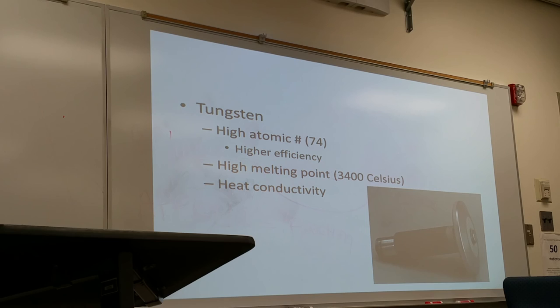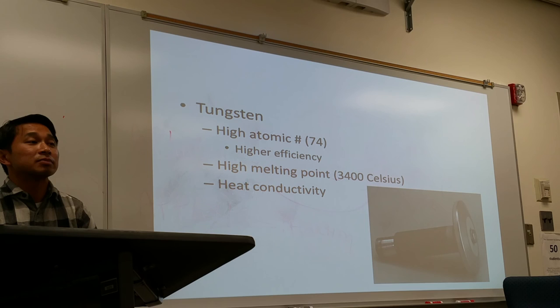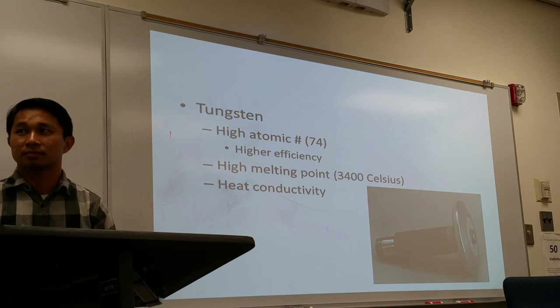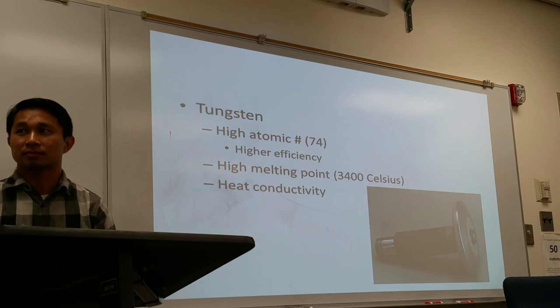Why tungsten? Because it has a high atomic number — 74 — which makes it very efficient for x-ray production. Another factor is that tungsten has a very high melting point of approximately 3,400 degrees Celsius. The production of x-rays generates a lot of heat, and tungsten's high melting point helps it withstand that. Tungsten also has high heat conductivity — it absorbs heat easily and releases it fast.